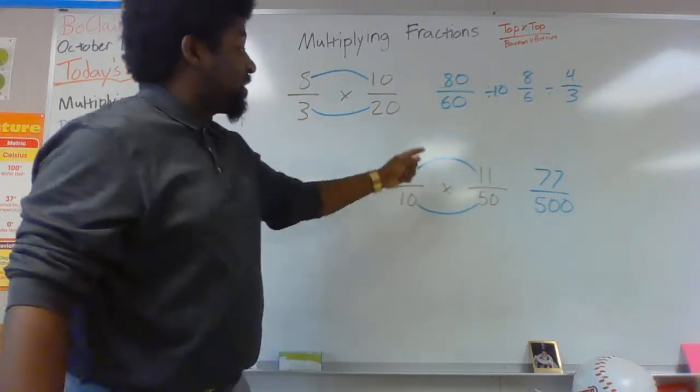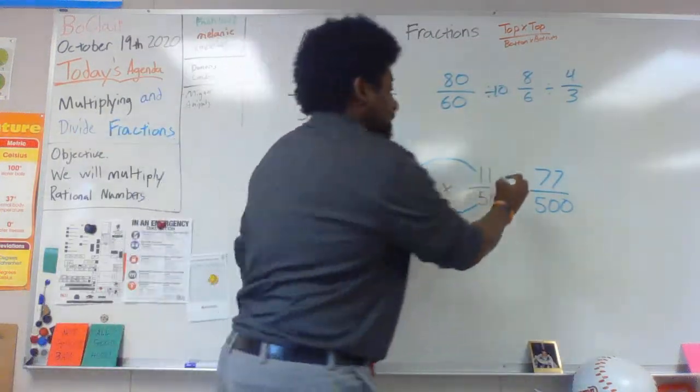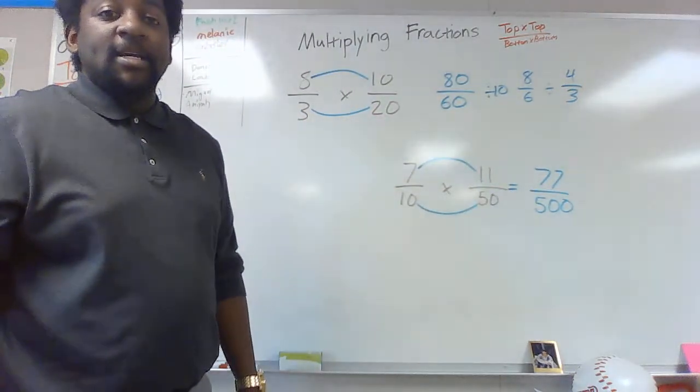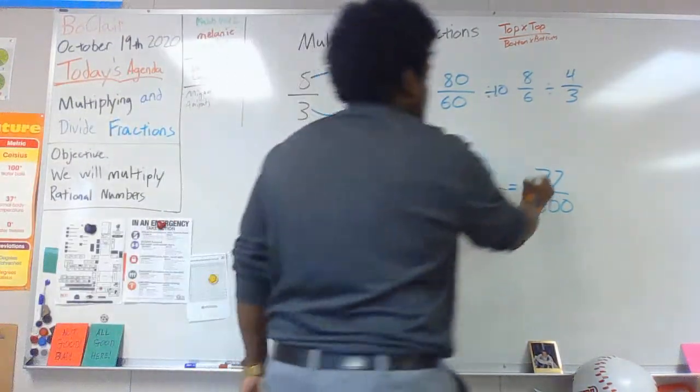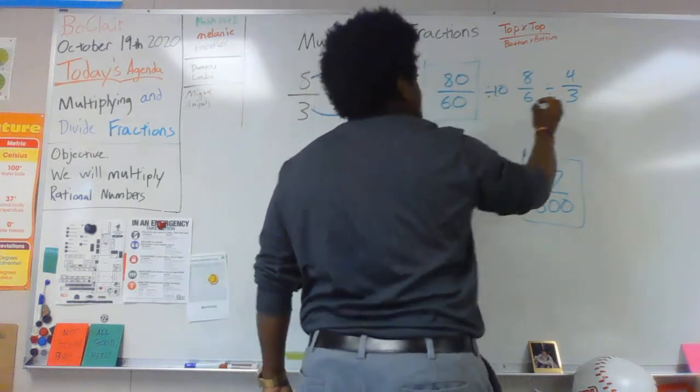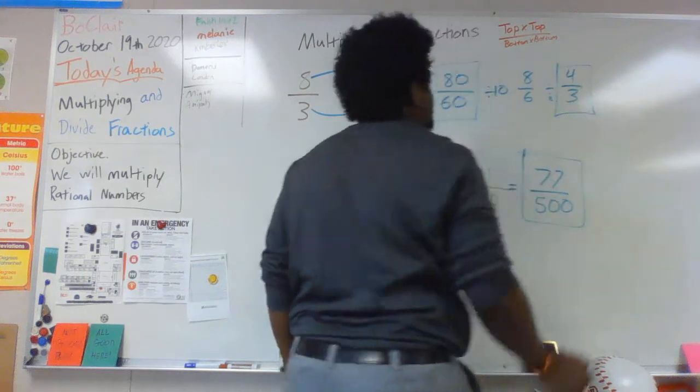So 7/10 times 11/50 equals 77/500. You do not need to simplify the answer. I will take this answer. If you want to, please make sure you simplify it correctly, that would be by 2.